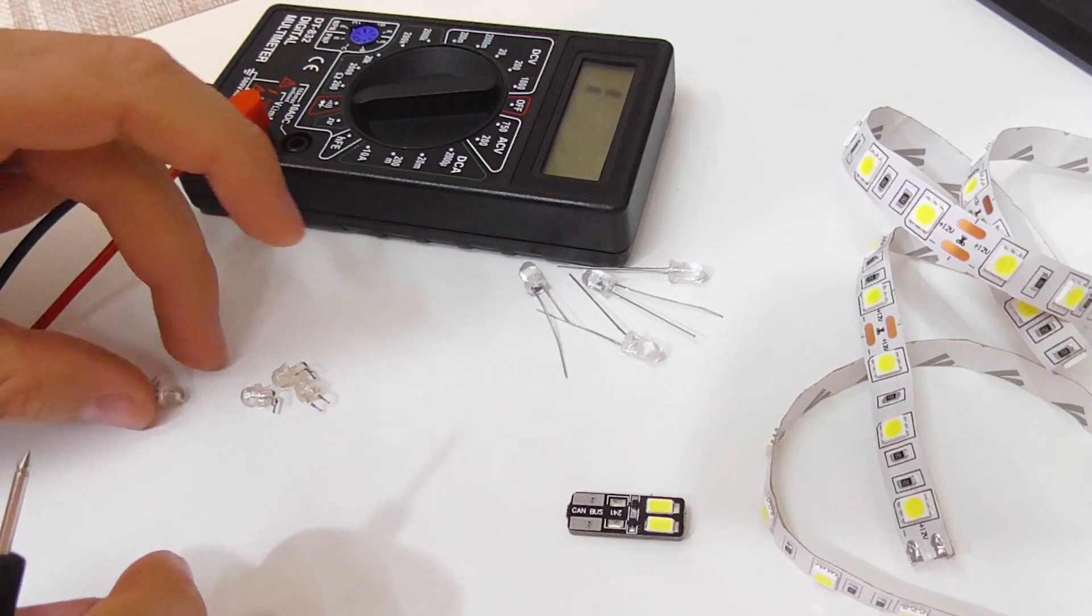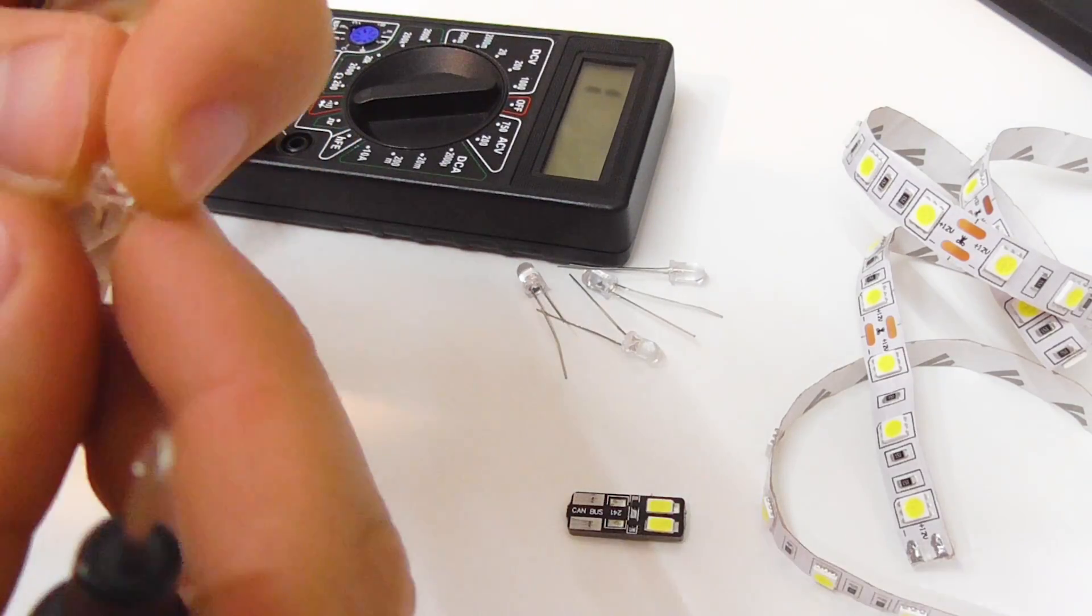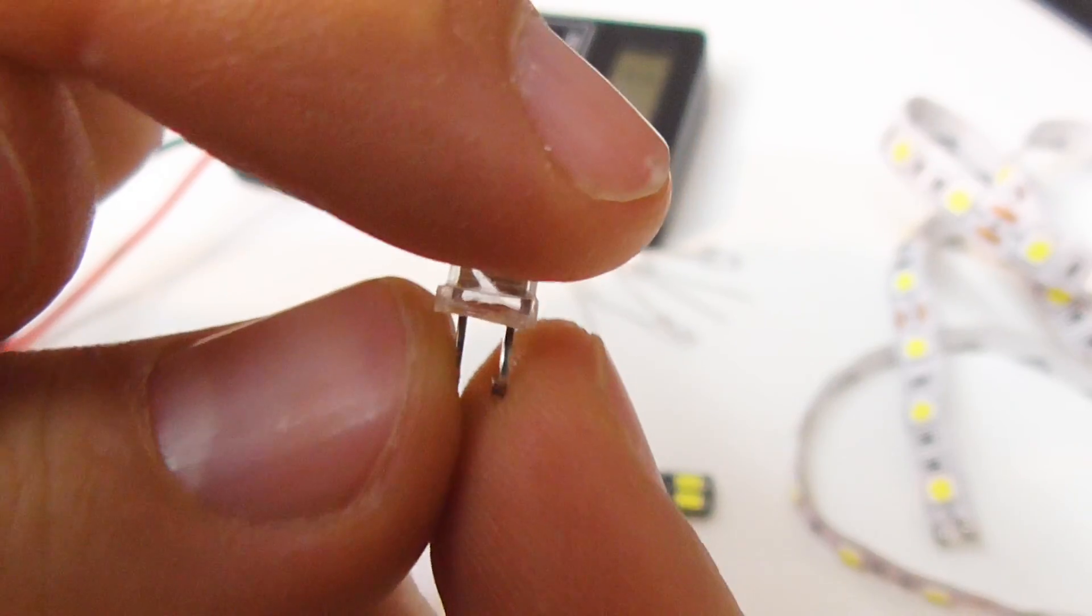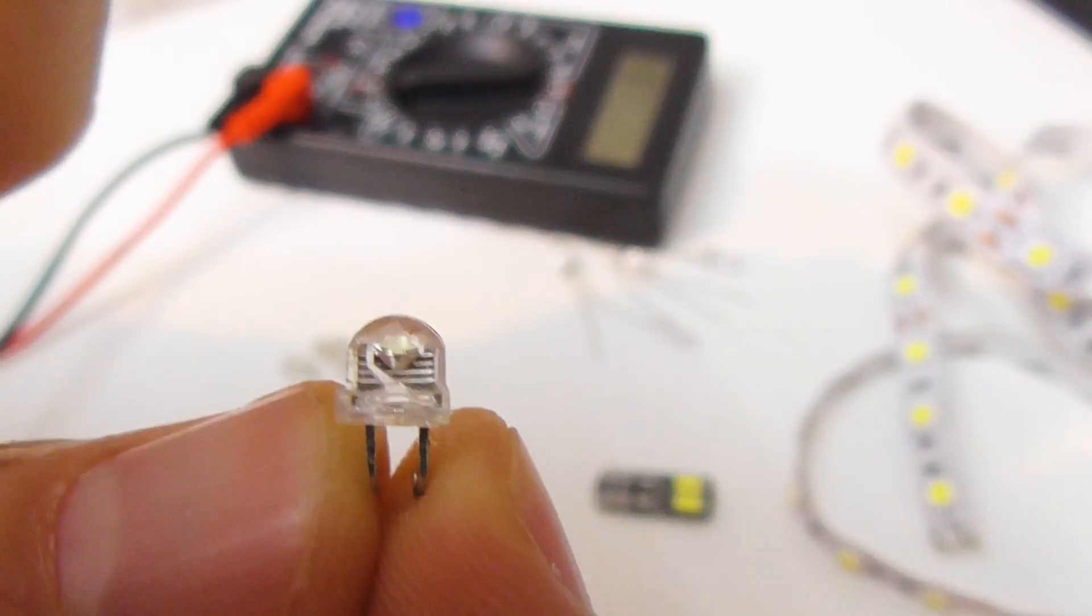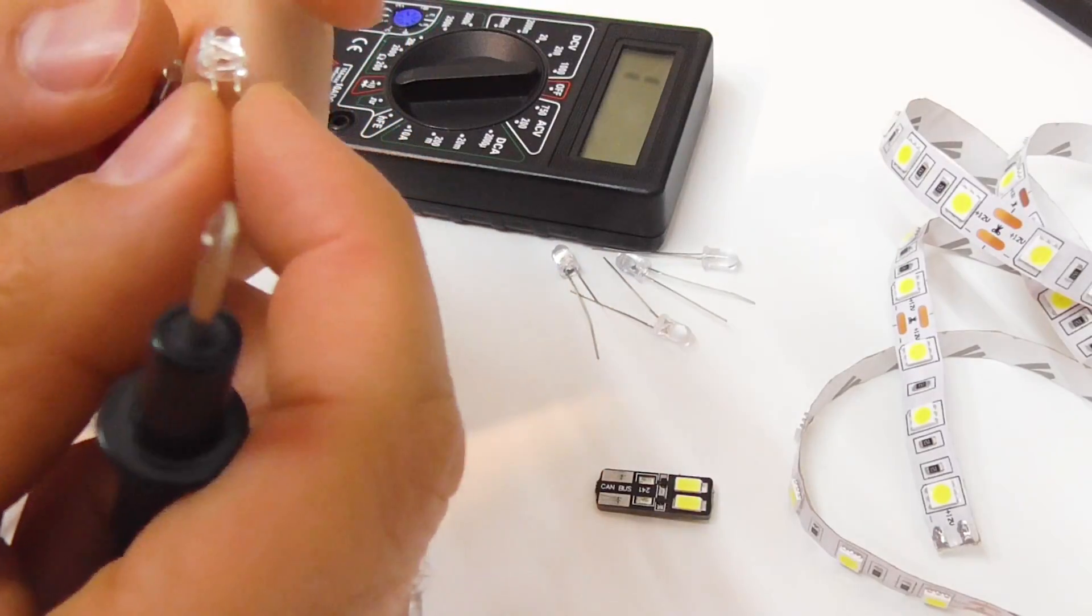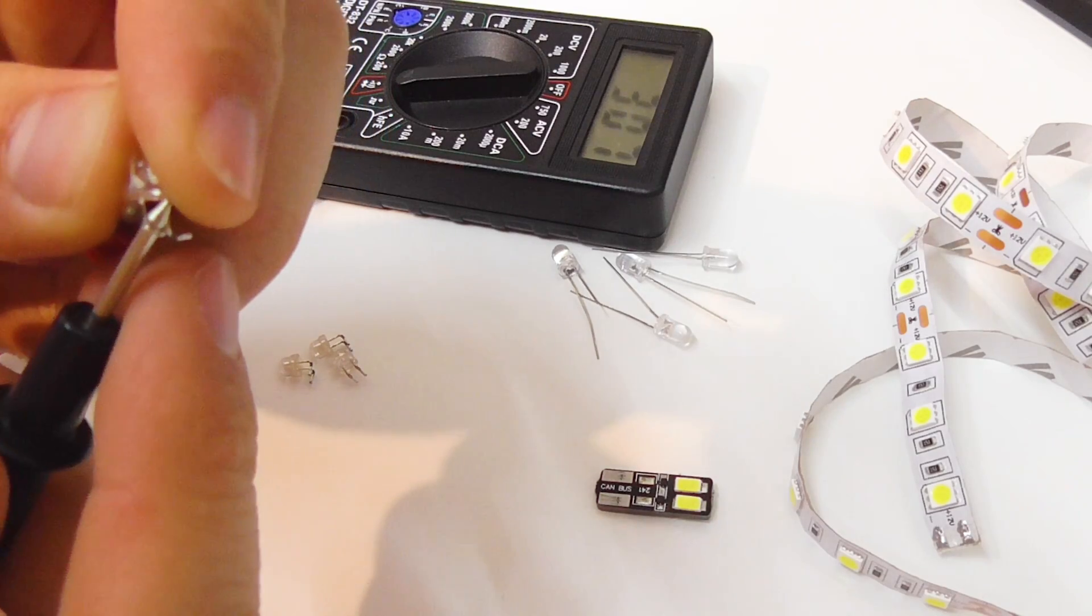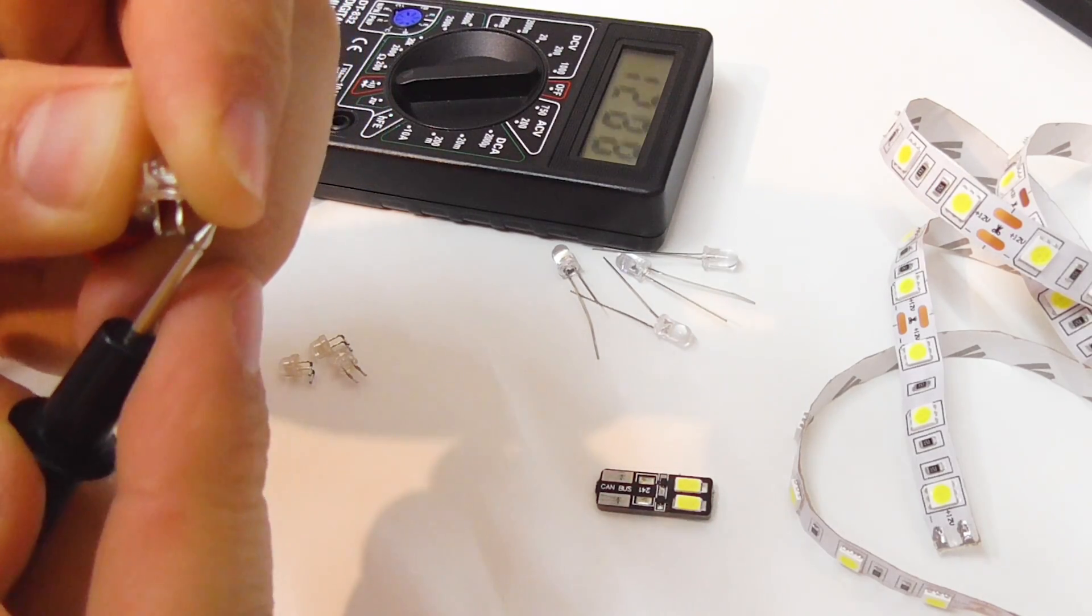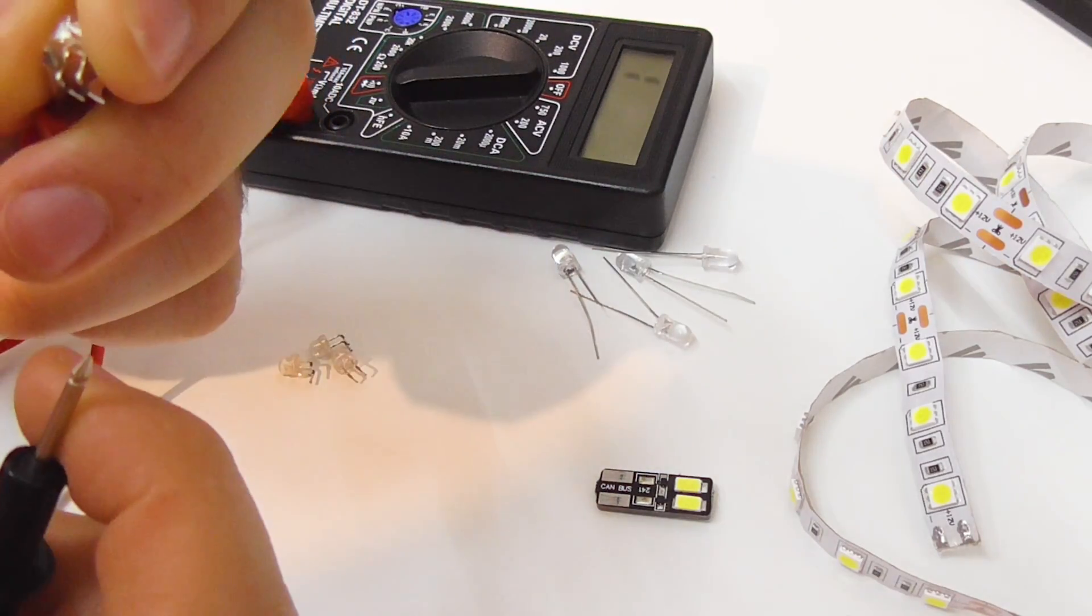But these smaller ones are not good. If we take a look, this also has a smaller side on the left and the larger on the right. So let's connect the positive there and the negative there. I don't see any light but the numbers go down almost to zero.